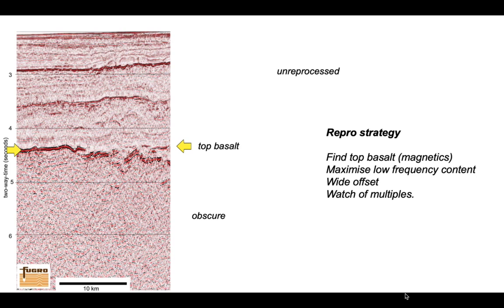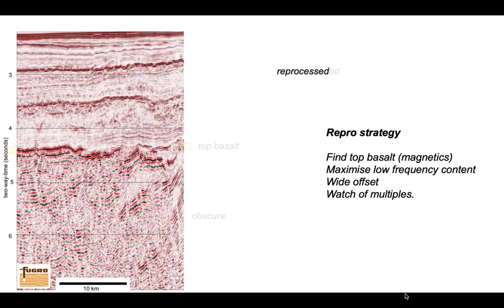As part of their reprocessing strategy, Fugro first located the top of the basalt layer using a magnetic survey. They then maximized retention of low-frequency content during processing, increased the role of long-offset wide-angle incidence between source and receiver during stacking, and paid special attention to identifying multiples from reverberations below the basalt and from the base of the basalt itself. As a consequence, they were able to clean up the deeper part of the image to reveal structure that had previously been highly obscure.